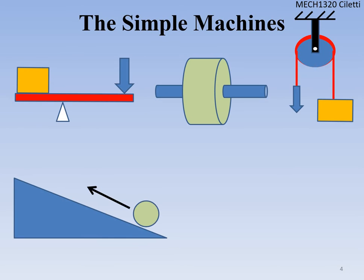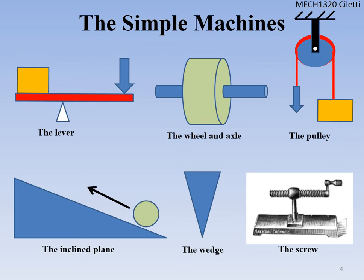Looking at each machine: pulleys are used to lift weight — cranes are an example. A wedge splits wood or drives between things. A wheel and axle is used in wheelbarrows, carts, or trucks. A lever lets us get leverage and pry something up. An inclined plane — like a wheelchair ramp — lets you ascend without stairs; the Egyptians used inclined planes to build the pyramids. And a screw fastens things together.